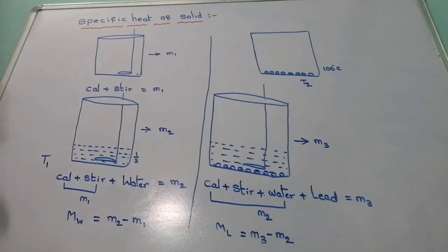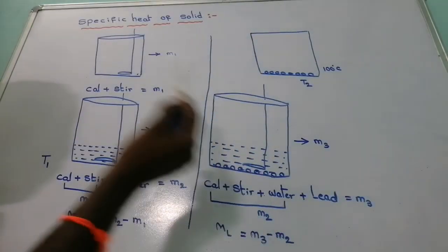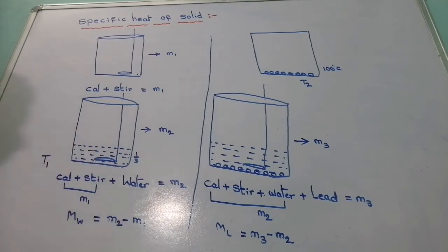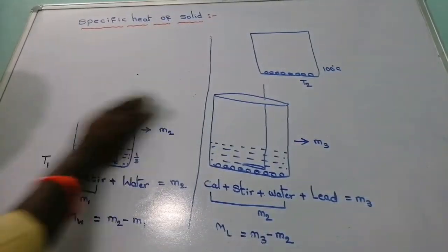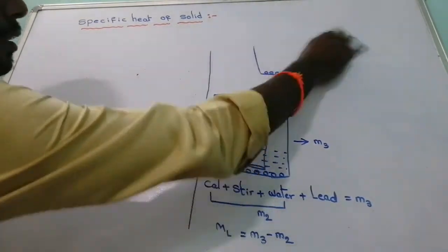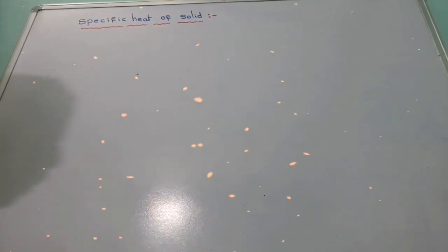When the lead shots are placed into the calorimeter, the lead shots — which have a higher temperature — will lose heat, while the water and the calorimeter will gain heat. According to the heat principle, the heat lost by the hotter body always equals the heat gained by the colder body.